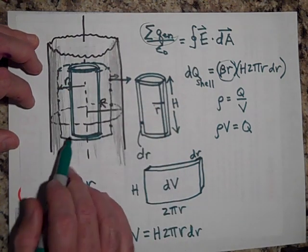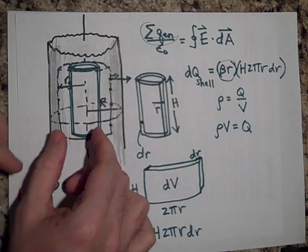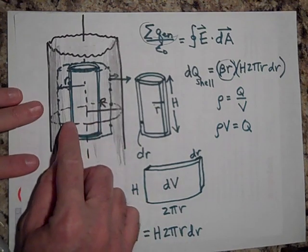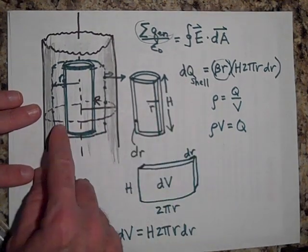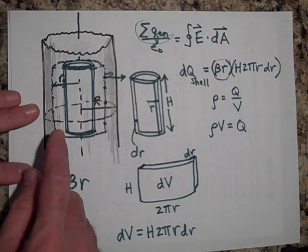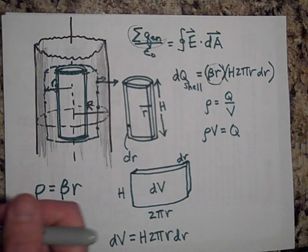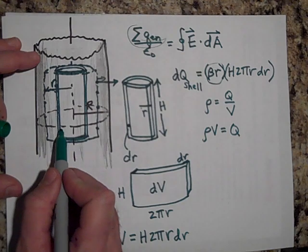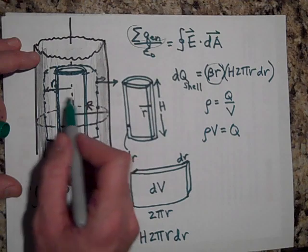And then to get the charge enclosed, what you need to do, and this is tricky, is you have to add up a bunch of charges that are in cylinders as you go out. So you find the charge enclosed in this cylinder and every other one. And so this is the cylindrical shell. So what I mean is that this charge Q_shell is not the charge inside here, it's the charge inside here. That's the charge enclosed in there, not in the whole thing.